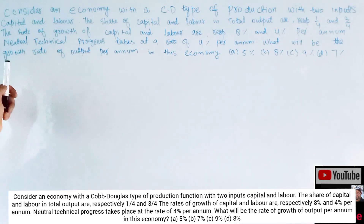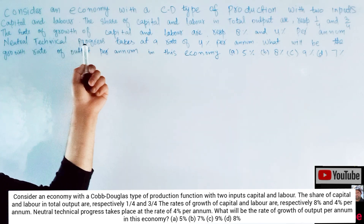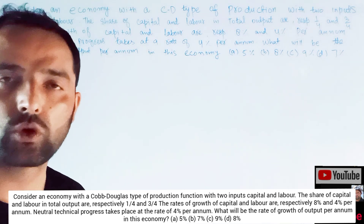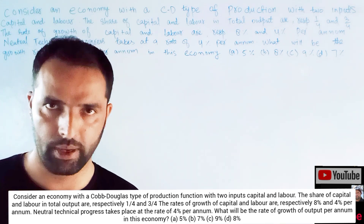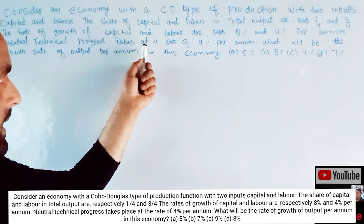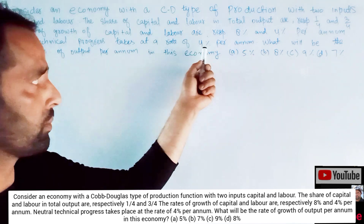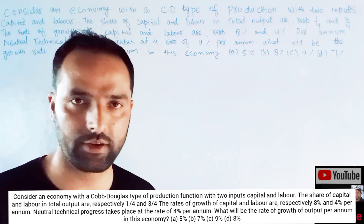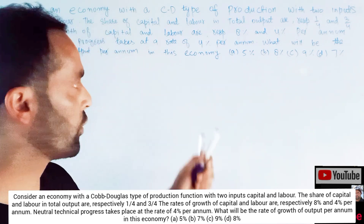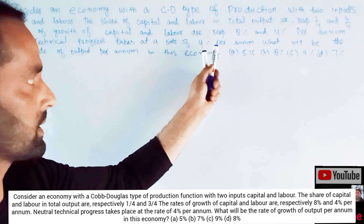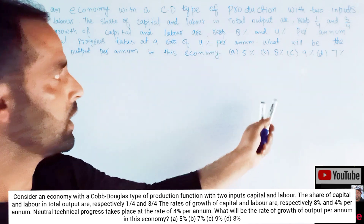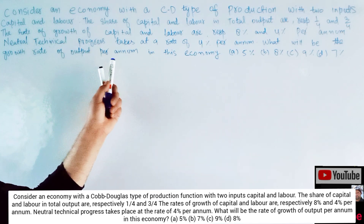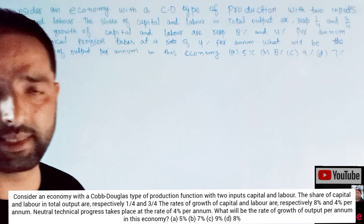Also, the question tells us neutral technical progress, that is the total factor productivity, grows at a rate of 4% per annum. We have to find the growth rate of output per annum for this economy.